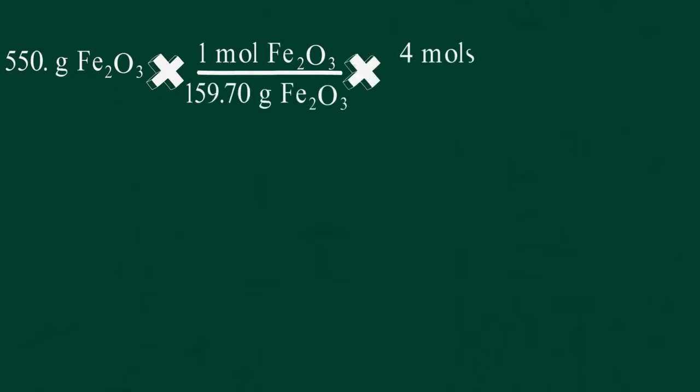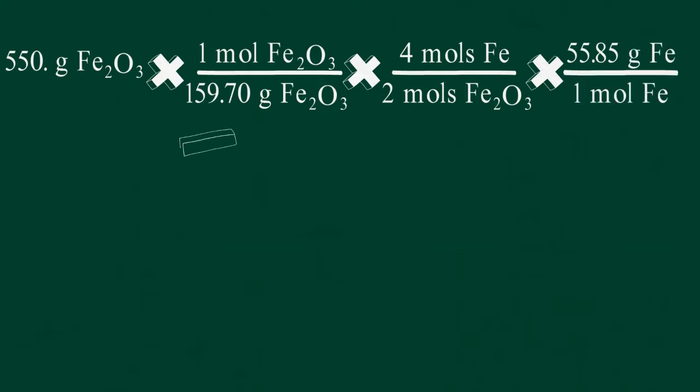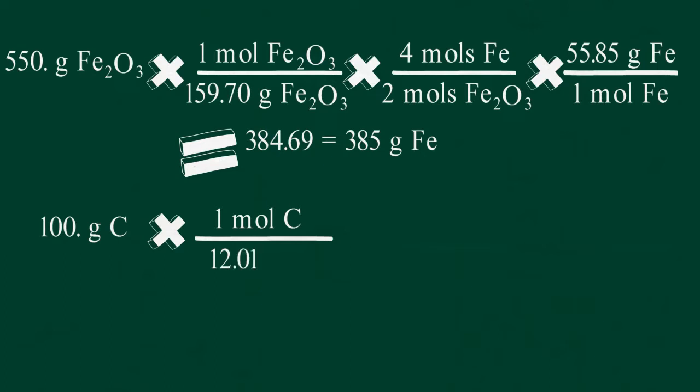We use the stoichiometric relationship between the reactants and the desired product, in this case iron, to calculate the amount of product that can be produced from each reactant. Set up both equations, making sure that the units cancel, and that the stoichiometric conversion for hematite to iron is included.